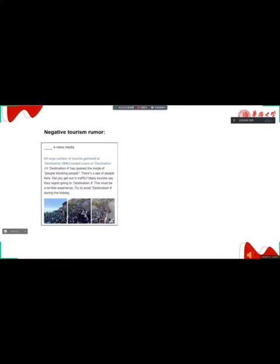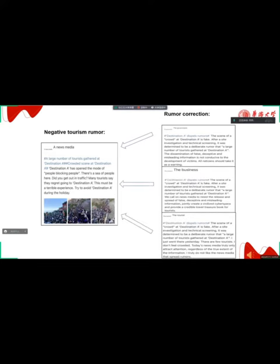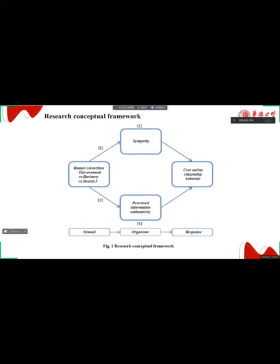As you know, negative rumors damage the destination image and tourist experience. We aim to compare how rumor correction sources affect user online citizenship behavior, with perceived information authenticity and substance as mediating links.